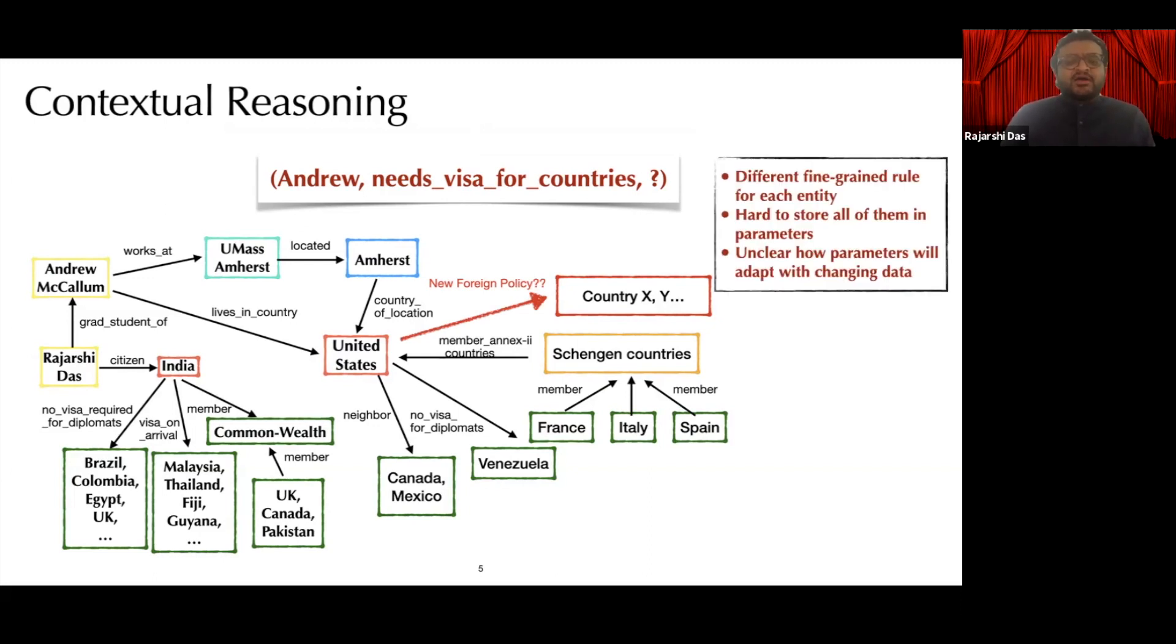In a nutshell, to answer such queries, you need different fine-grained rules for each entity. Hence, it becomes hard to store all of them in the model parameters. Also, it's unclear how the parametric models will adapt when the underlying data changes.